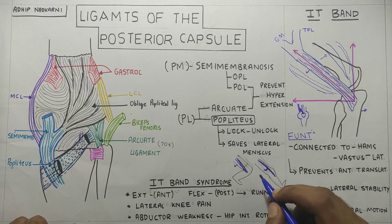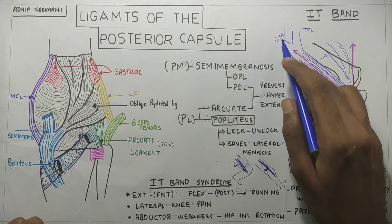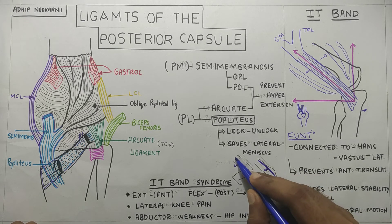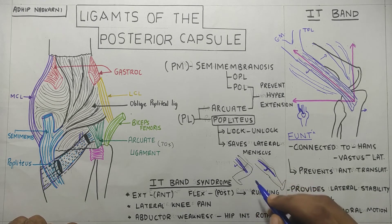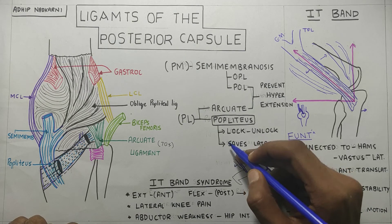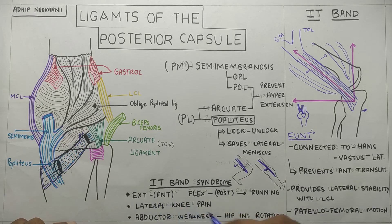Apart from this, abductor weakness can also be another reason. When there is weakness of the abductors like gluteus maximus or medius, the hip will go into internal rotation. This will affect the position of the IT band and can cause excessive friction over the lateral condyle or proximally at the greater trochanter, causing IT band syndrome.